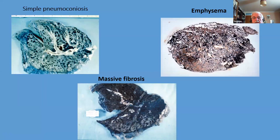It was also noted in the 1930s that many coal miners have emphysema. This raised the great question: is emphysema, and with it chronic obstructive pulmonary disease, due to exposure to coal dust, or is it just a consequence of cigarette smoking? Most miners and most men in the 1930s through 1960s smoked — about 80% of the male population smoked — so emphysema was very common in everyone.